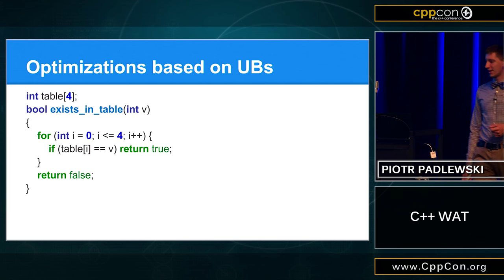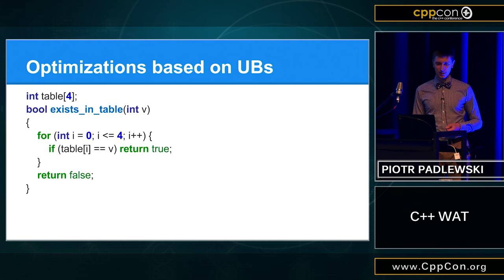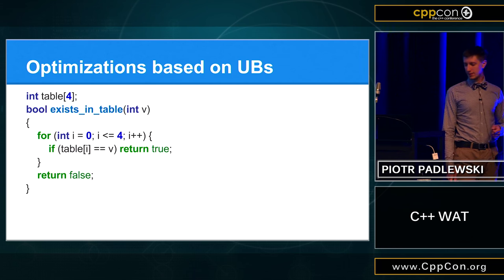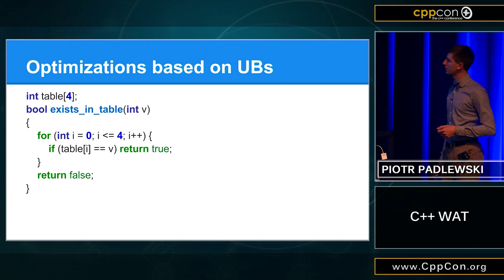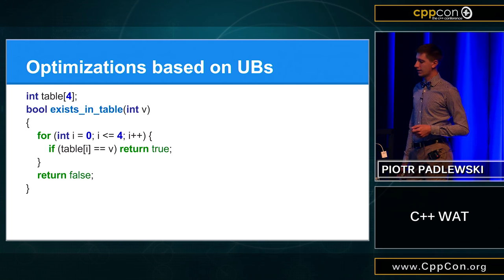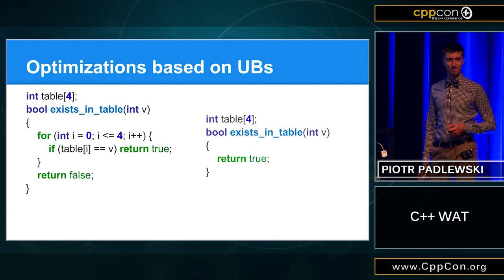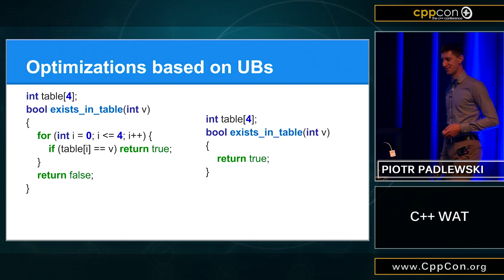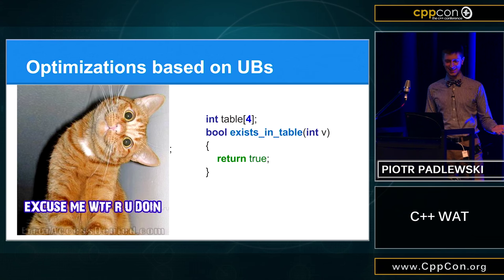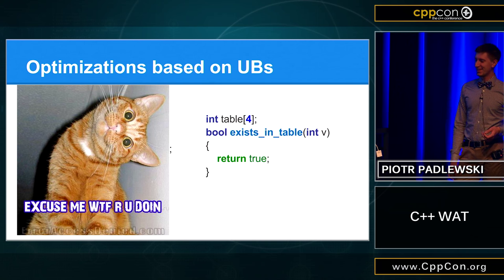Okay. So let's see some cool optimizations. So this function, of course, has undefined behaviour, because we are trying to access the fifth element of the table. And if you will compile it with Clang, it will produce something like this. Return true. And you will be probably like, excuse me, what are you doing?